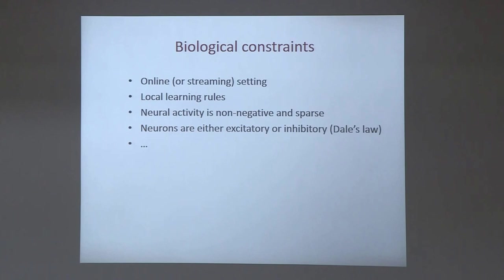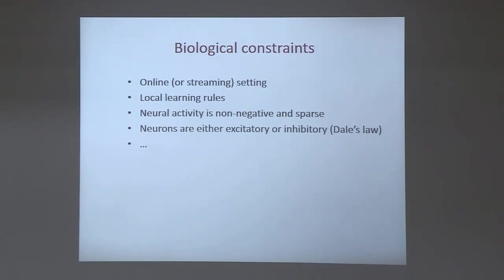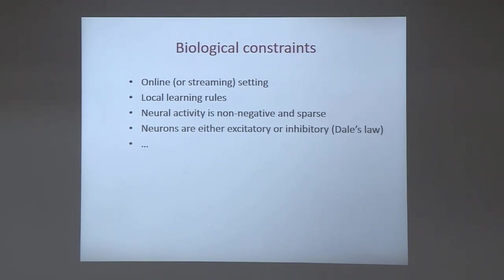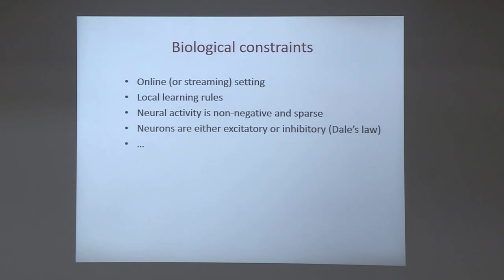For computer scientists, some of those constraints may seem like roadblocks because they basically negate some of the successful algorithms used at the moment. That's how we thought also when we started this work. But over a few years of developing this direction, we started to realize that these constraints are not really roadblocks, but more like guardrails — they direct the development of neural networks and help us come up with better algorithms.